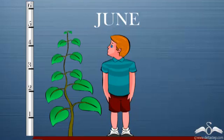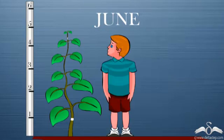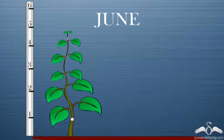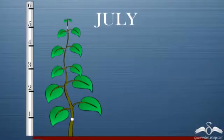It was the month of June and young Peter made two small markings on his favourite plant — one at the top and one at the bottom. Now with time the plant grows, so both the markings should have gone up.